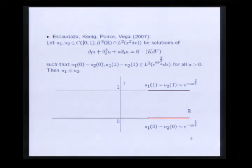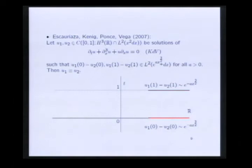In 2007, Escauriaza, Kenig, Ponce, and Vega proved that if we have two strong solutions of the KdV equation with polynomial decay at infinity such that at the times t equals 0 and t equals 1 the difference decays exponentially with this order for x positive, then the two solutions must be equal. This result comes from the confrontation between two types of estimates: Carleman type estimates versus a lower estimate. This is the methodology that we will use to prove our theorem. We will follow this article.